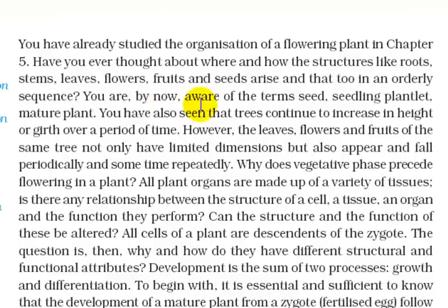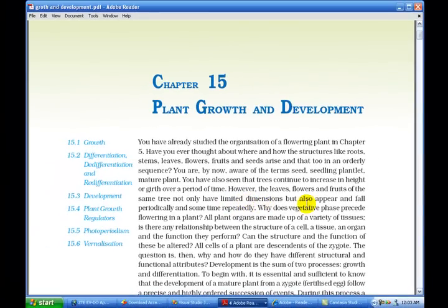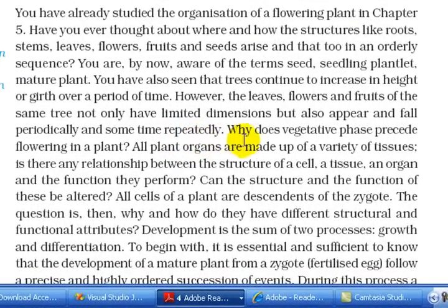You are, by now, aware of the terms: seed, seedling, plantlet, and mature plant. You have also seen that trees continue to increase in height over a period of time. However, the leaves, flowers, and fruits of the same tree not only have limited dimensions but also appear and fall periodically, and sometimes repeatedly. Why does the vegetative phase precede flowering in a plant?